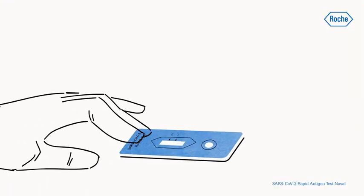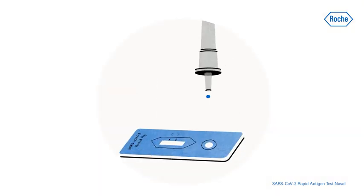Here's how to proceed with the sample. Place the test device on a flat surface. Turn the tube and apply four drops of extracted sample at a 90 degree angle to the specimen well of the test device.